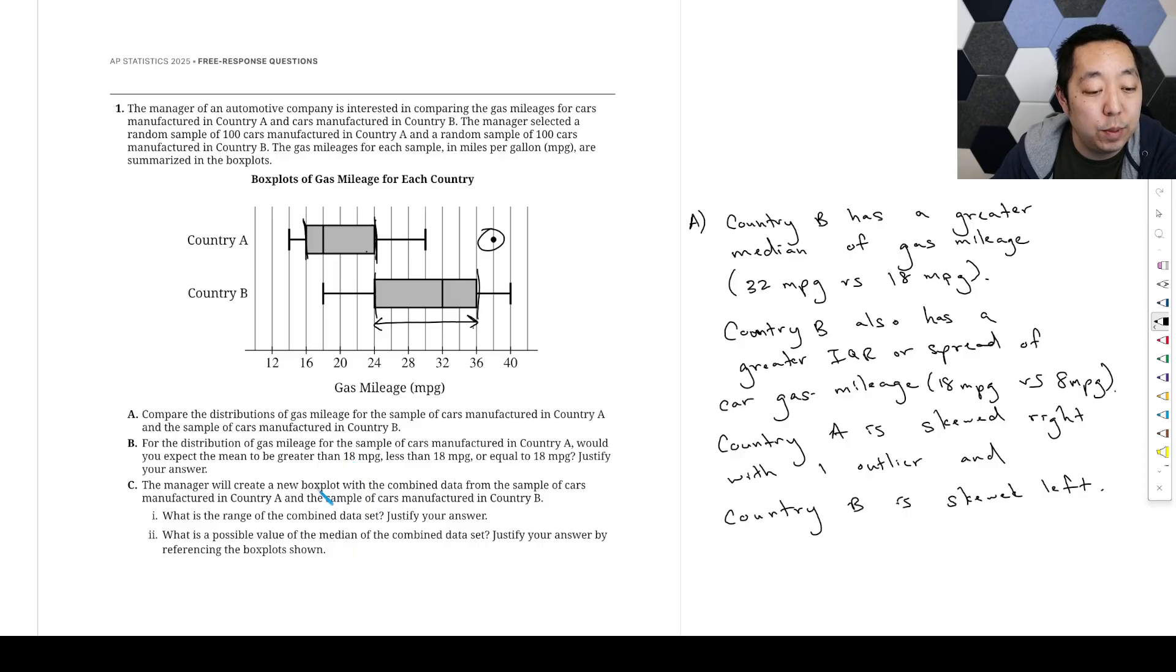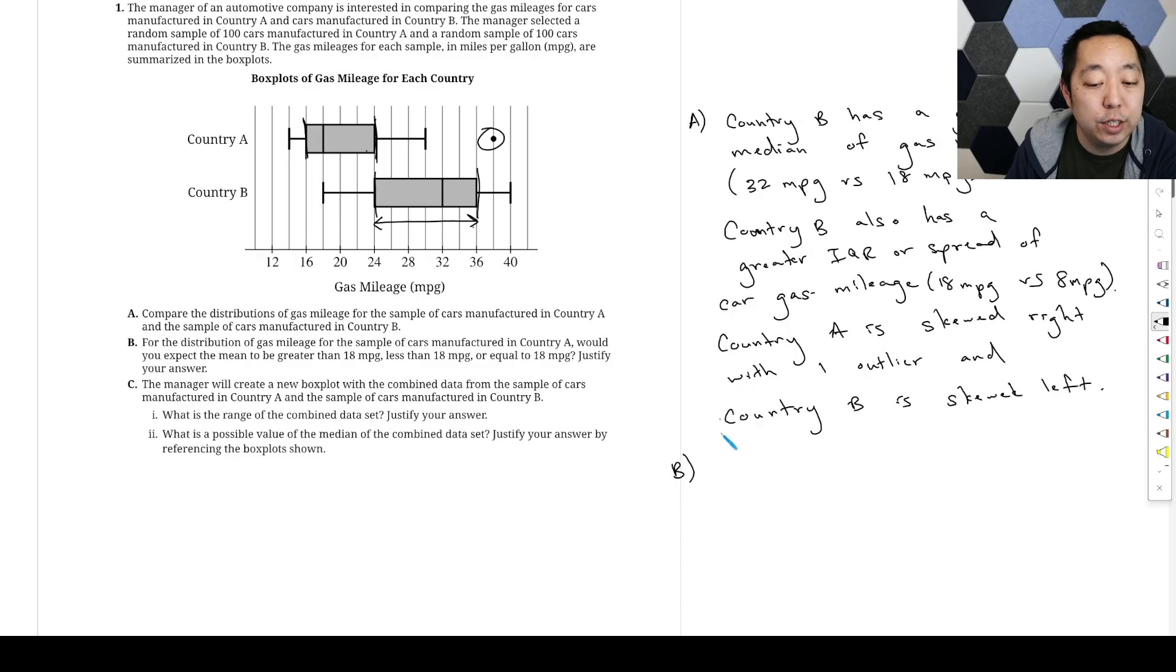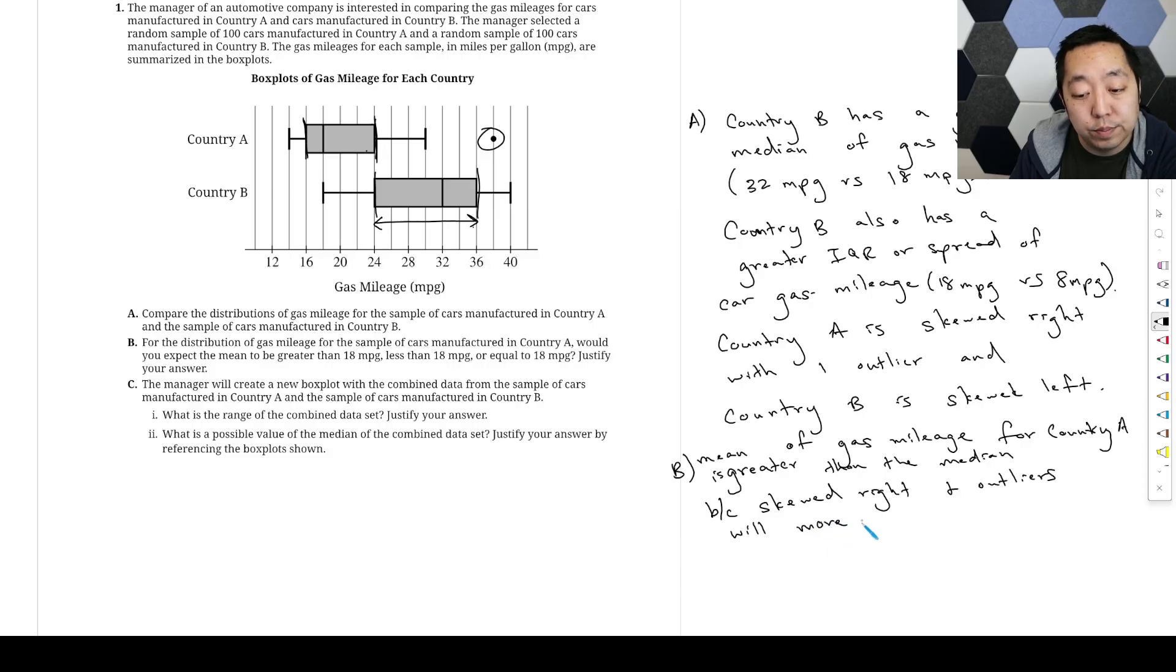For B, for the distribution of gas mileage for the sample of cars manufacturing country A, would you expect the mean to be greater than, less than, or equal to? So for part B, country A, it's going to be greater because of the skewed right. All of these outliers are going to shift it to the right. So we would expect it to be greater.